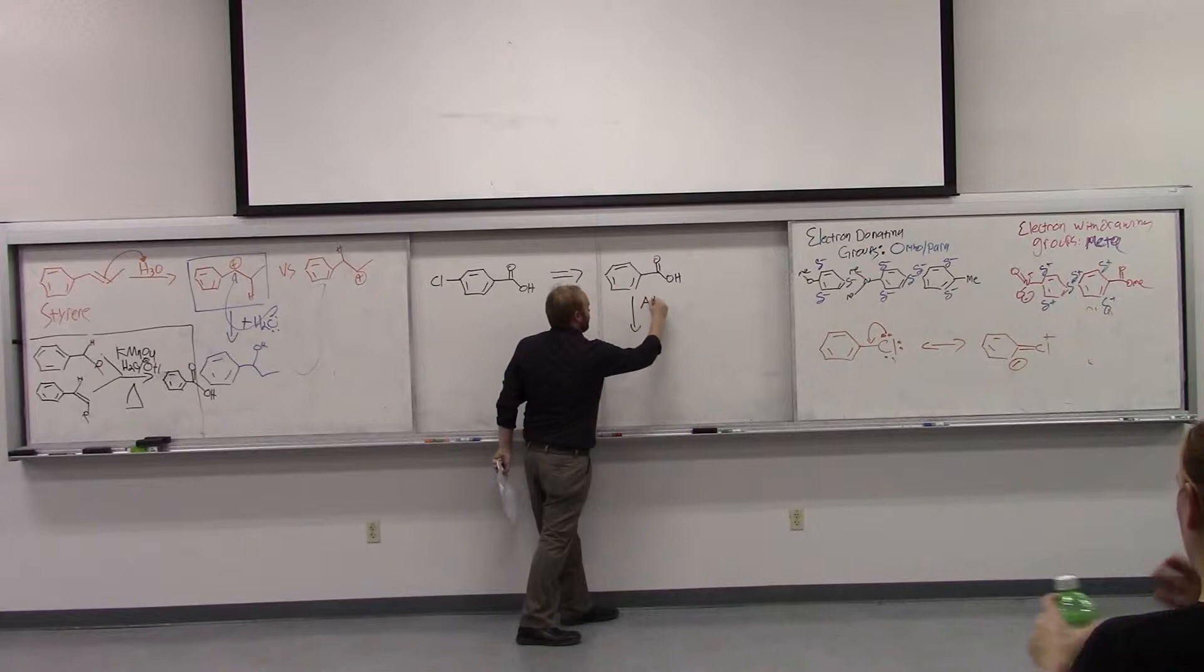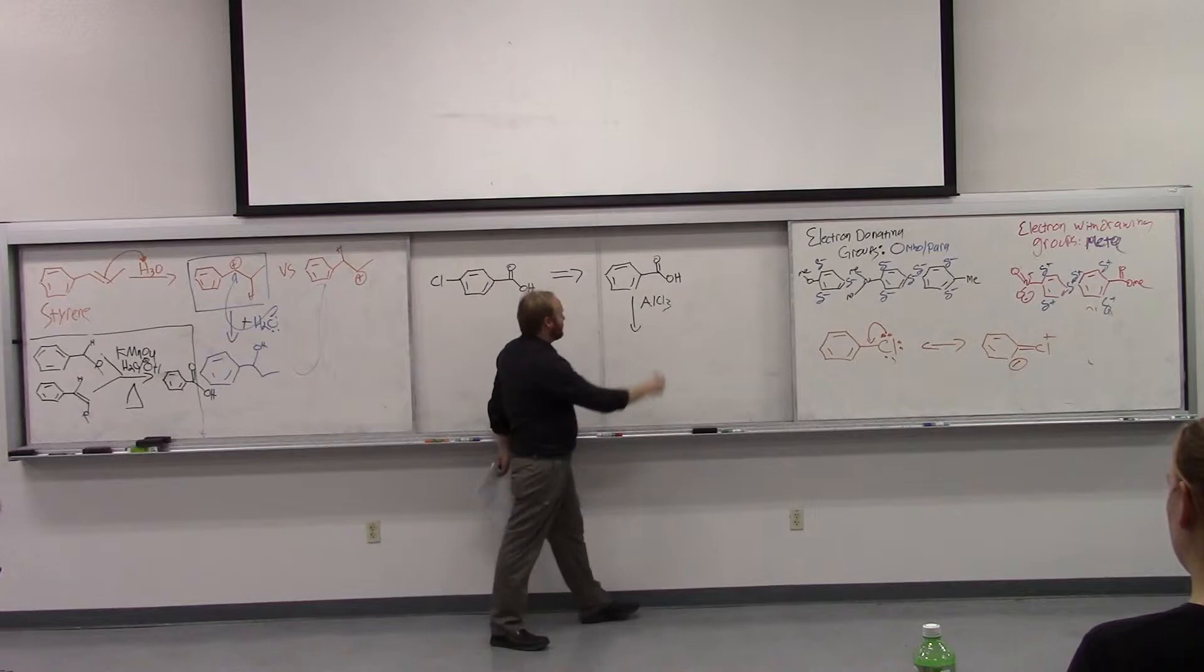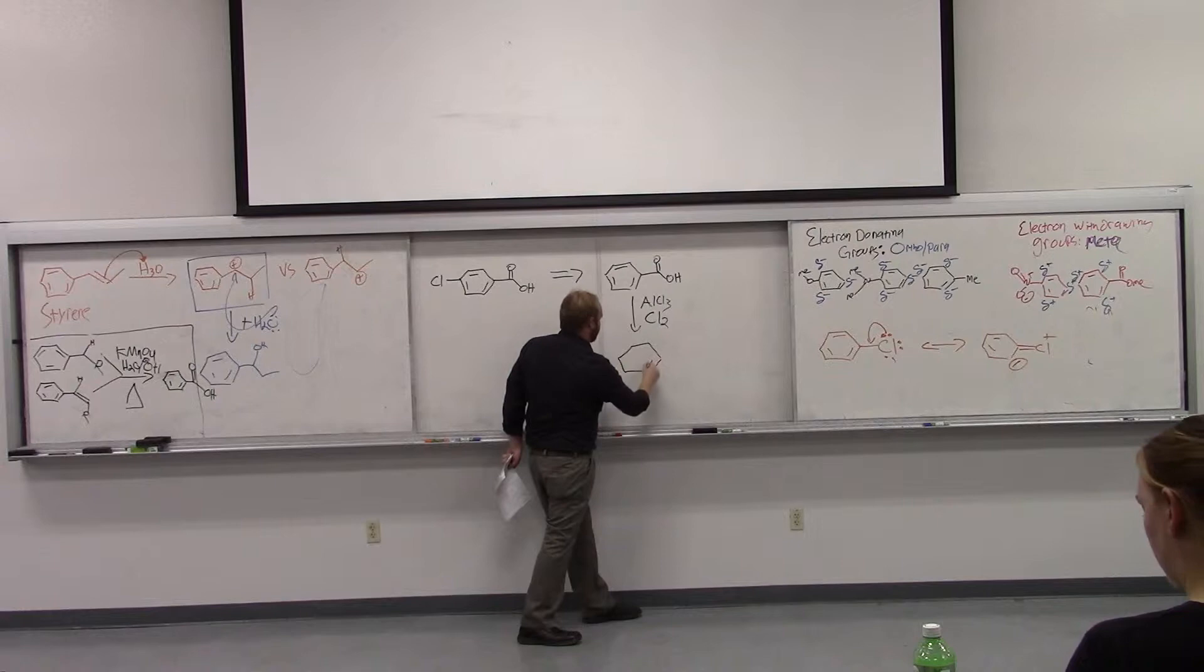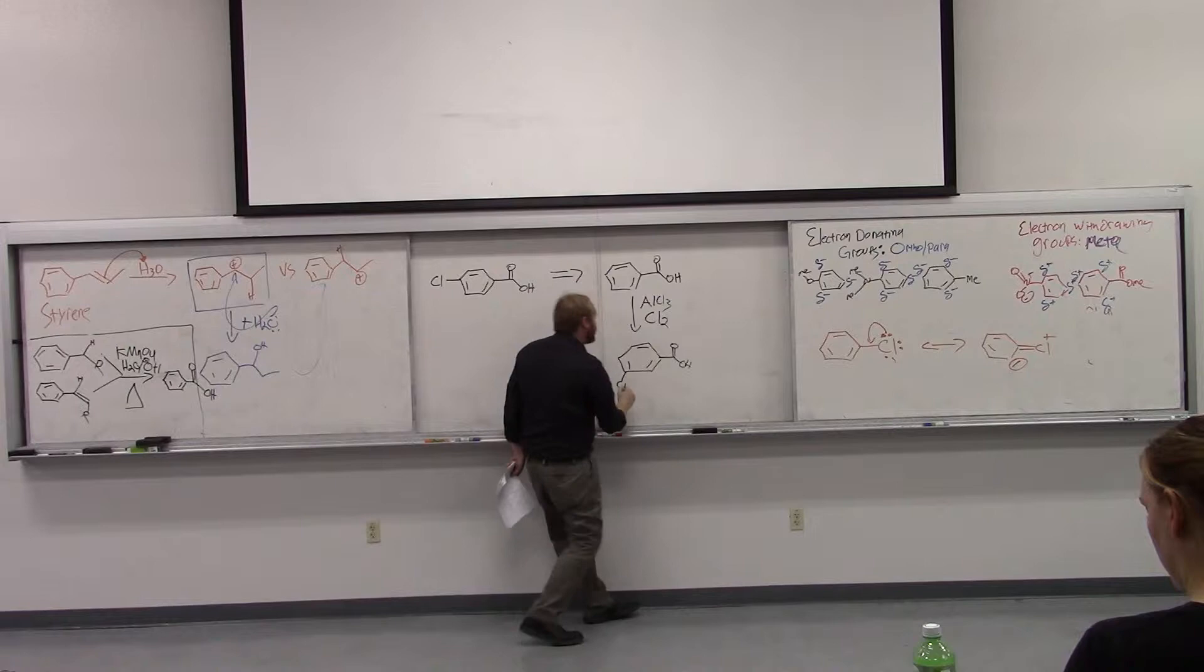It's a meta-director. So benzoic acid, the carboxylic acid is an electron withdrawing group that's going to direct meta. So if we try to chlorinate this using AlCl3, or FeCl3 is fine as well, just aluminum catalyst, plus Cl2, the product we would get would be the meta-chlorinated product.